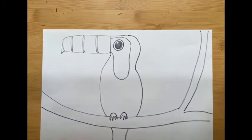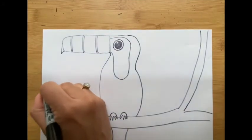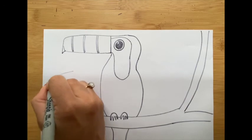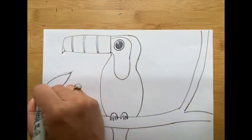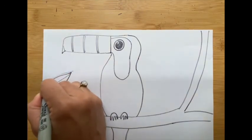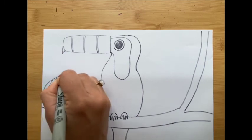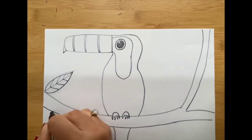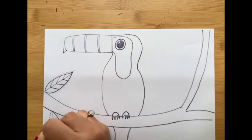That's his beak. Then you can draw some leaves on the branch of the tree. Toucans live in a tropical forest, so let's draw big leaves, nice big green leaves.